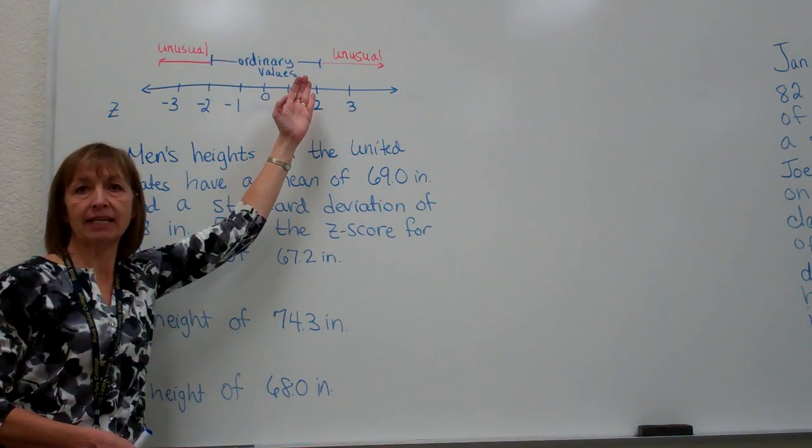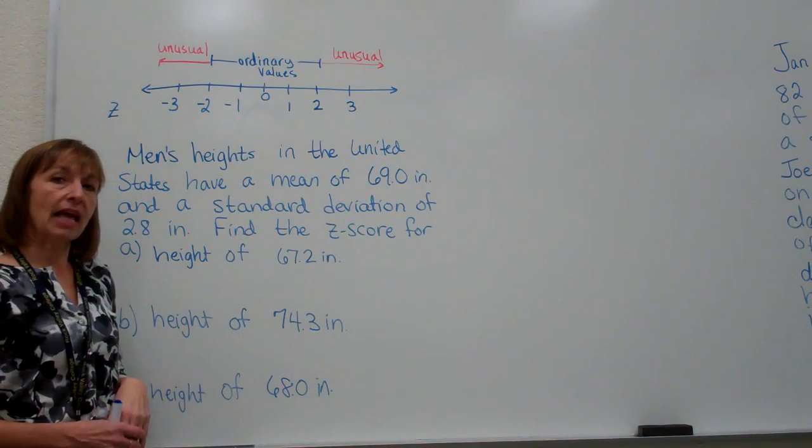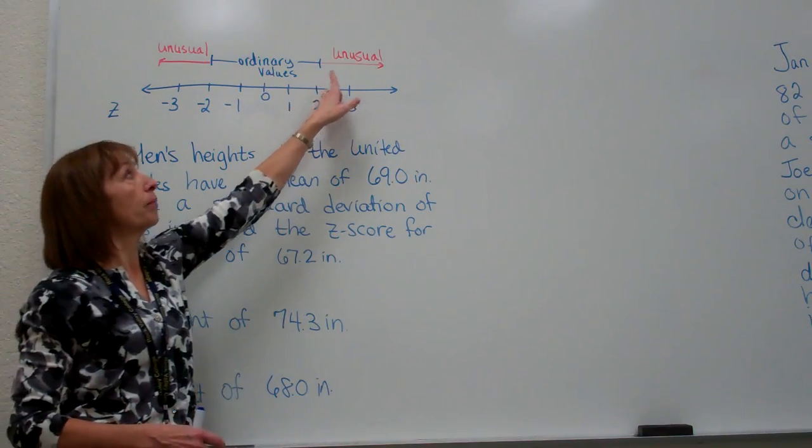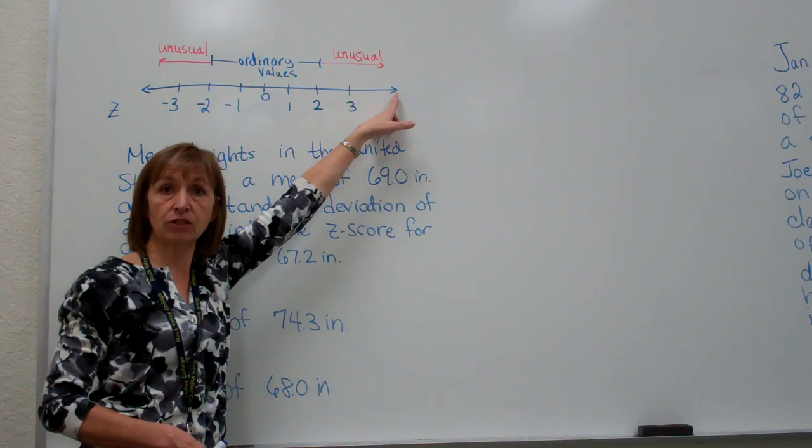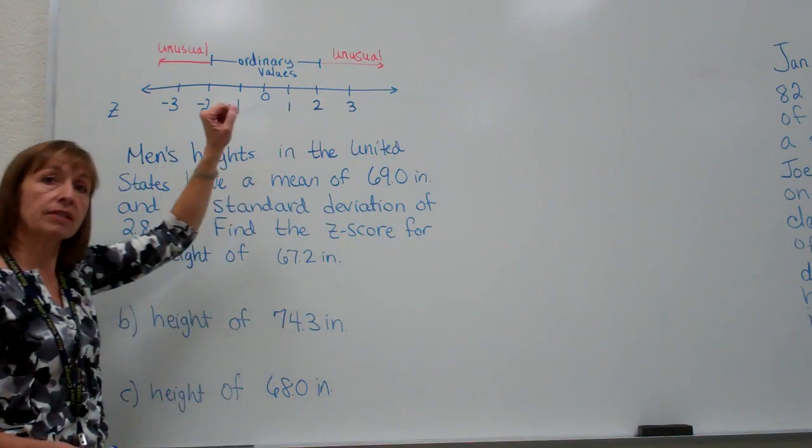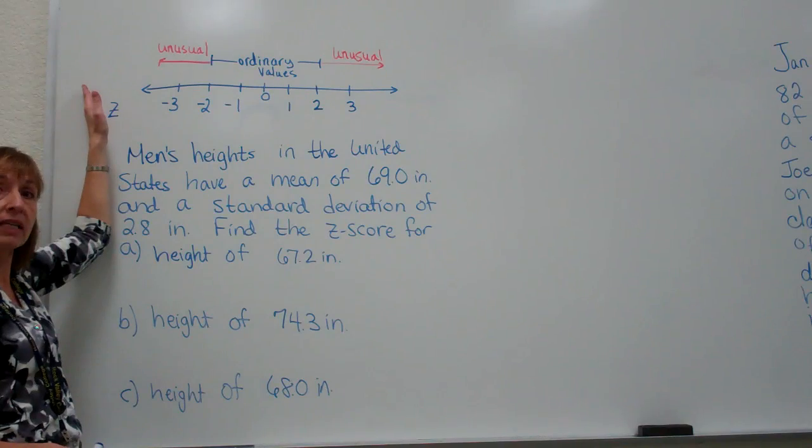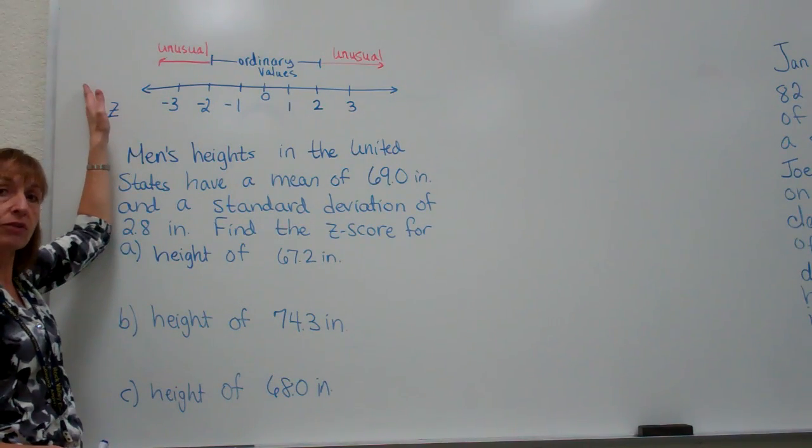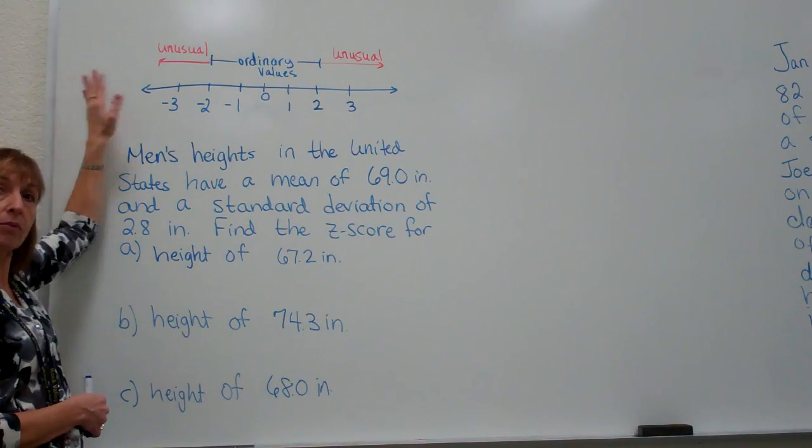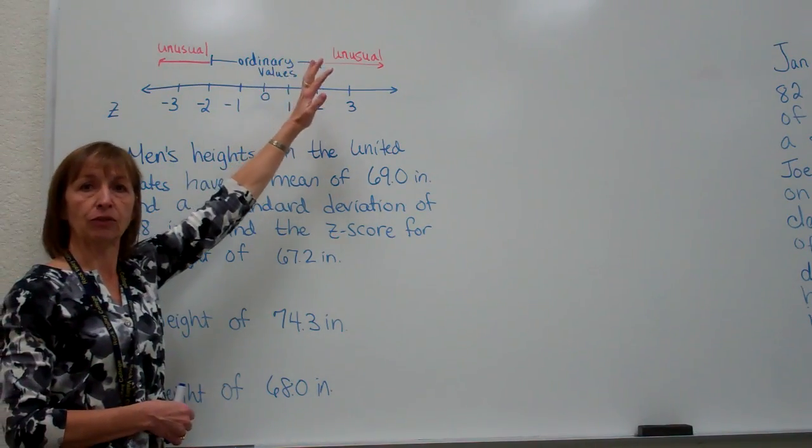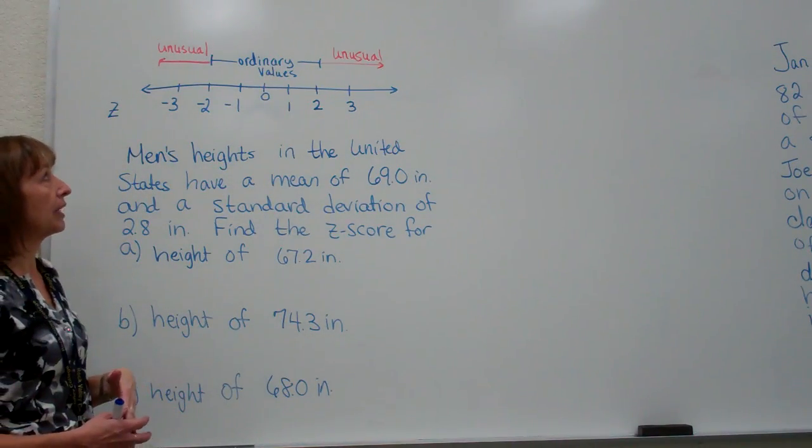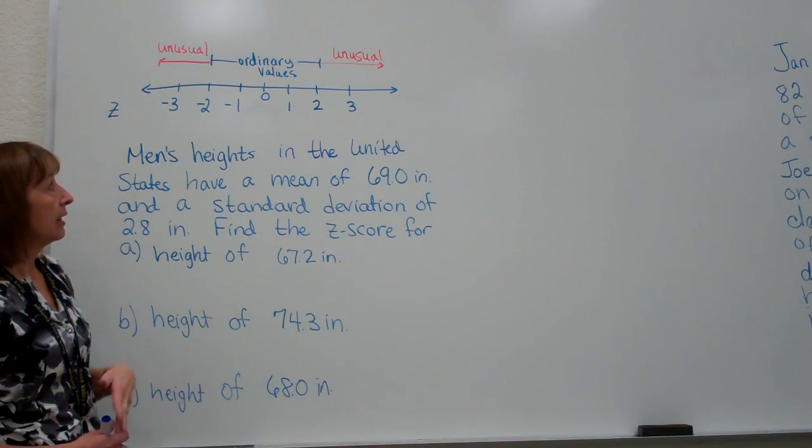If we have any data values that have z-scores that are either bigger than two, so more than two standard deviations above the mean, or smaller than negative 2, two standard deviations below the mean or more than that, then those are unusual values and we want to make sure that we identify it that way.